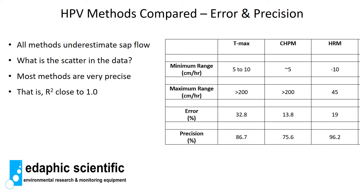We see differences at the minimum and maximum range between the different methods, and we also want to know how accurate the methods are at estimating real sap flow or sap velocity — looking at the error and precision of measurements. The Tmax has an error of about 33 percent, compensation heat pulse about 14 percent, and the heat ratio method about 19 percent. For precision, Tmax is 87 percent, compensation heat pulse about 76 percent, and the heat ratio method is very good at about 96 percent precision.